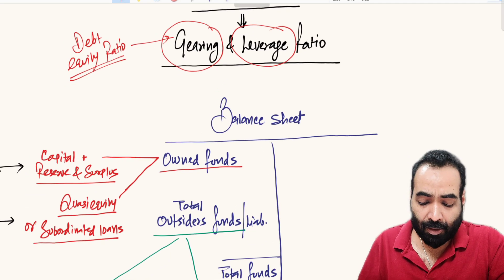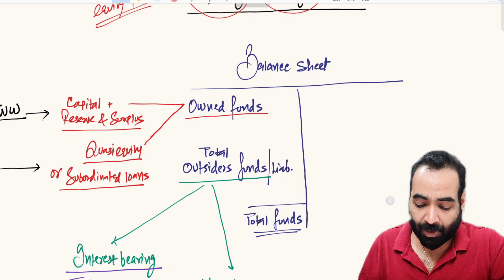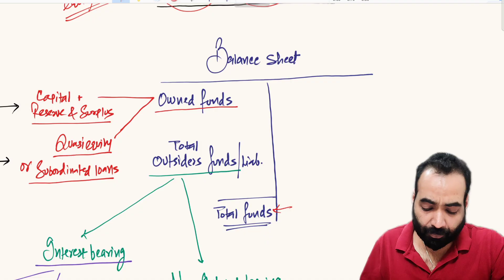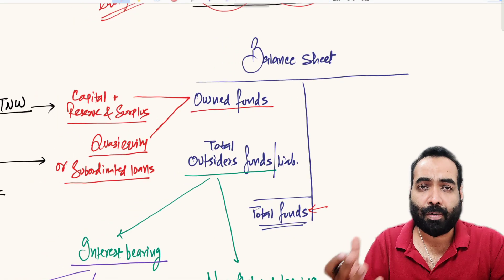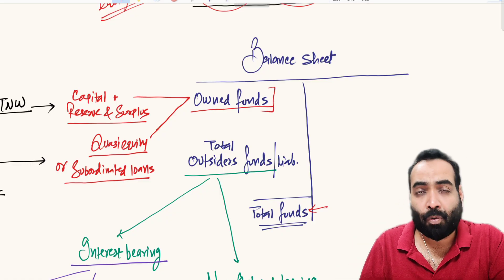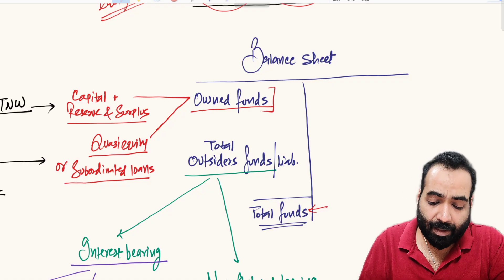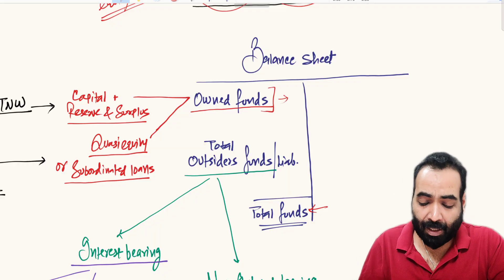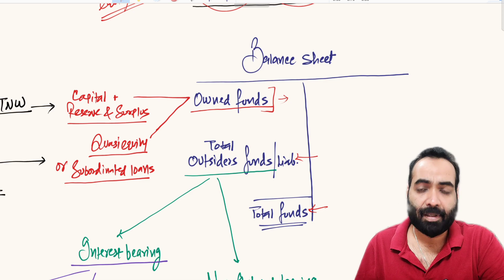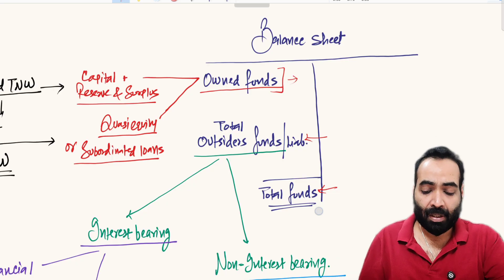This is a balance sheet — specifically the liability side, which represents the sources of funds. For the purpose of calculating gearing and leverage, there are two sources of funds: the first is owned funds, contributed by the promoters and their close ones who are running the business, and the second is outsiders' funds. These are the two divisions of the liability side of the balance sheet for this purpose.